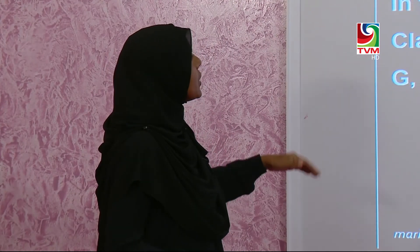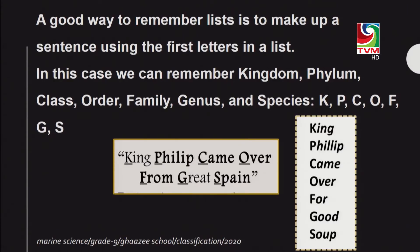There are certain ways to remember this order. One way is to look at the first letter of each level: K, P, C, O, F, G, S. You can make mnemonics using these letters, such as 'King Phillips came over from Great Spain' or 'King Phillips came over for good soup.' These easy sentences help you recall the order of classification.